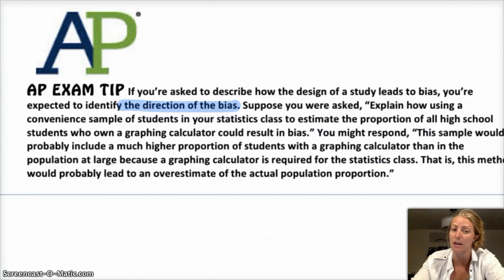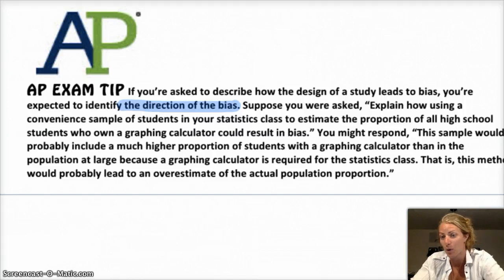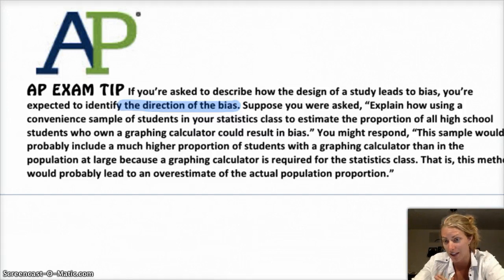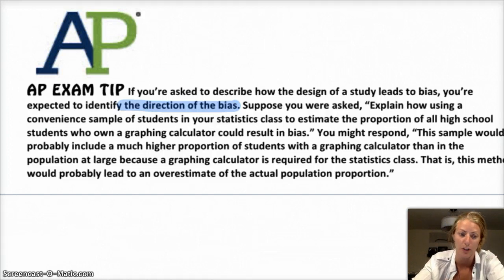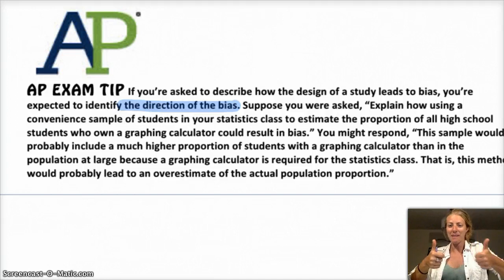Here's a tip for the AP: anytime you're asked to describe how the design of a study leads to bias, you are also expected to identify the direction of the bias. For example, if you know that the poll came from CNN, you have to say that you believe it's going to have a more liberal view. So the direction is just as important as saying that it's biased. Nice job.